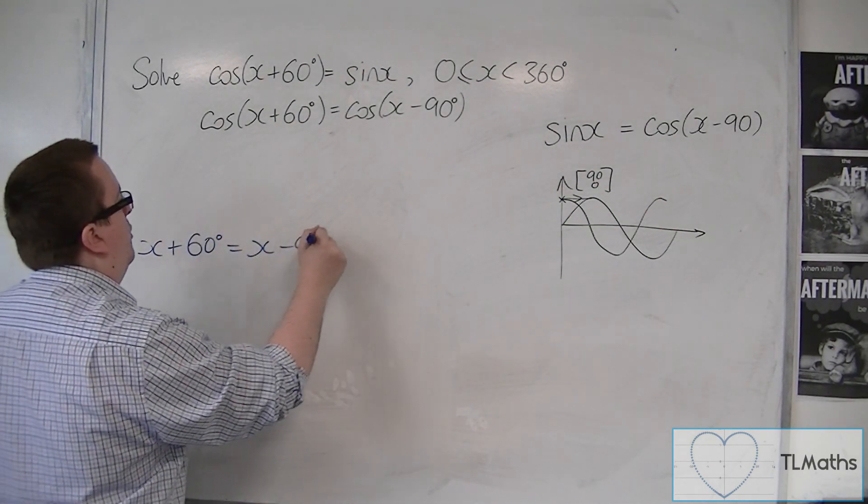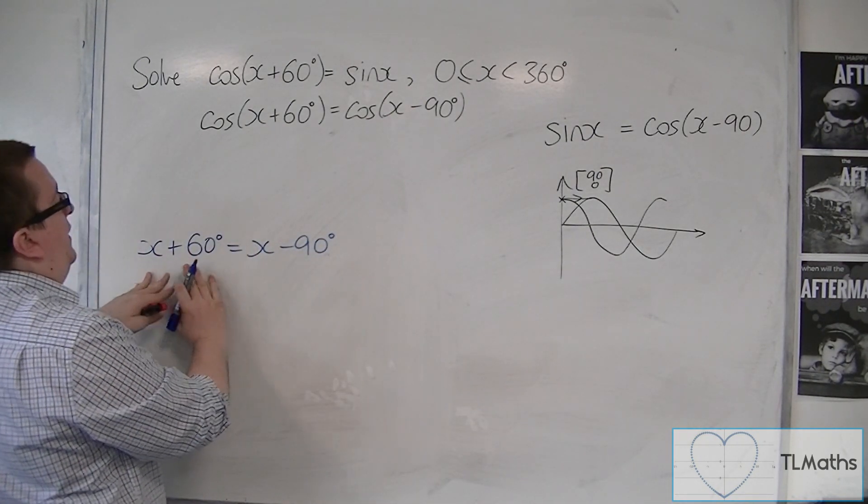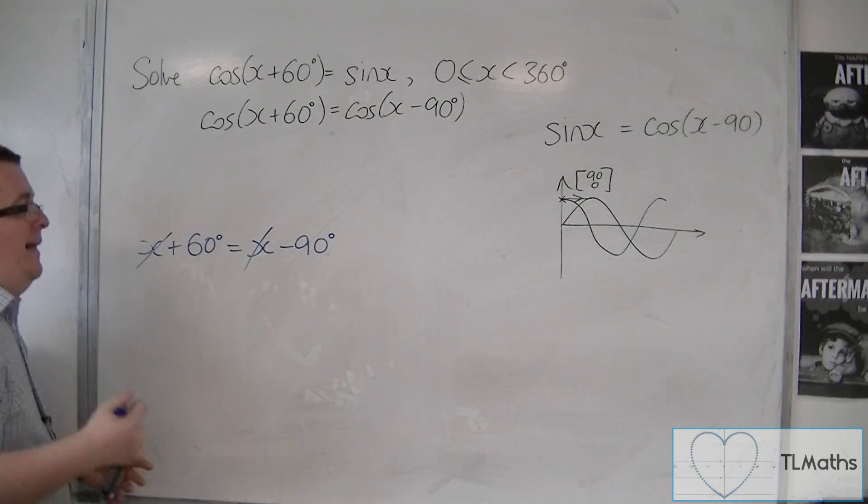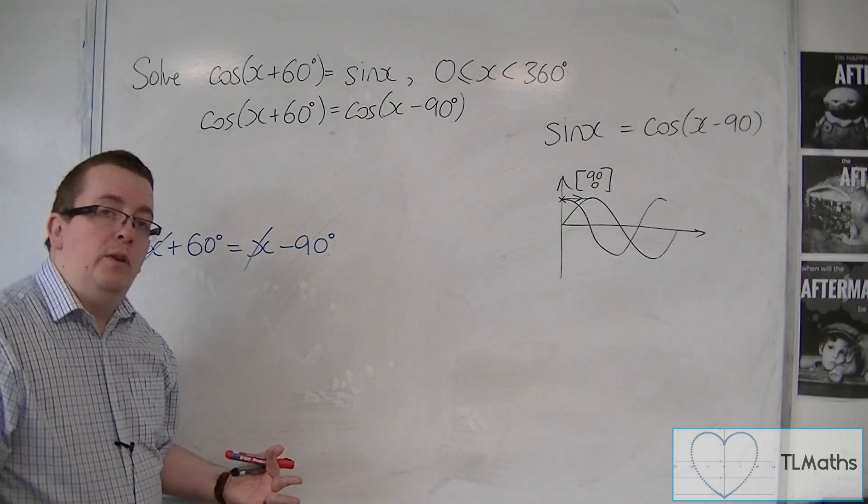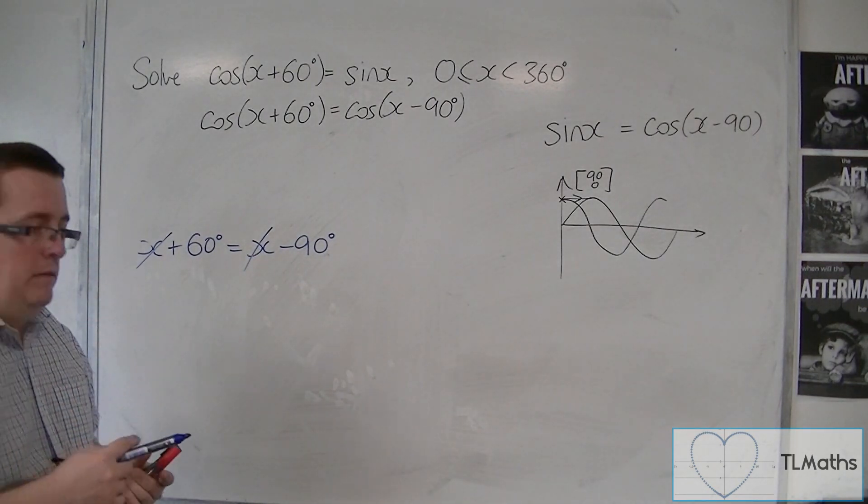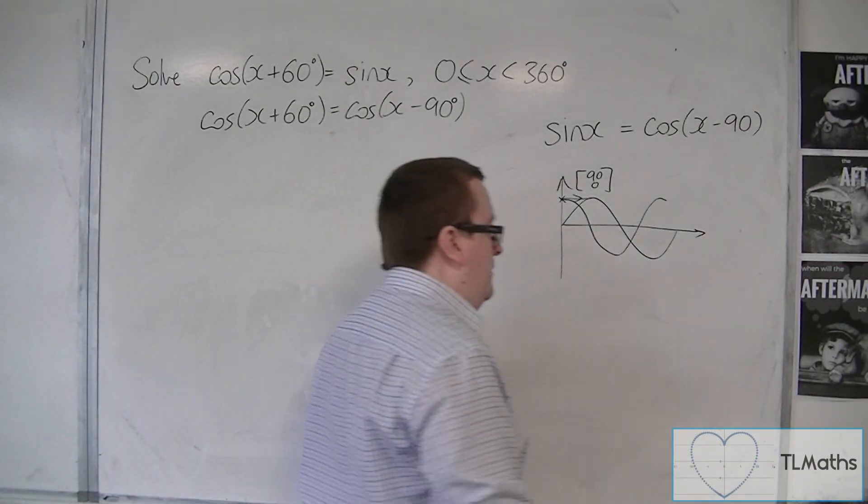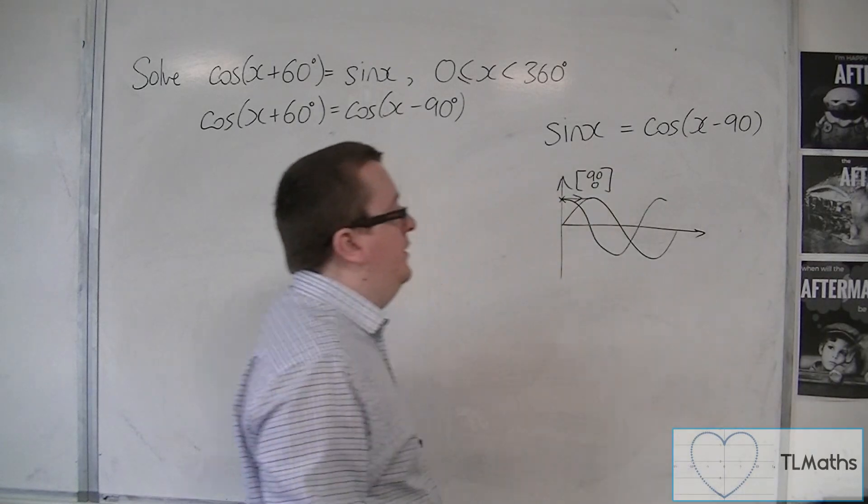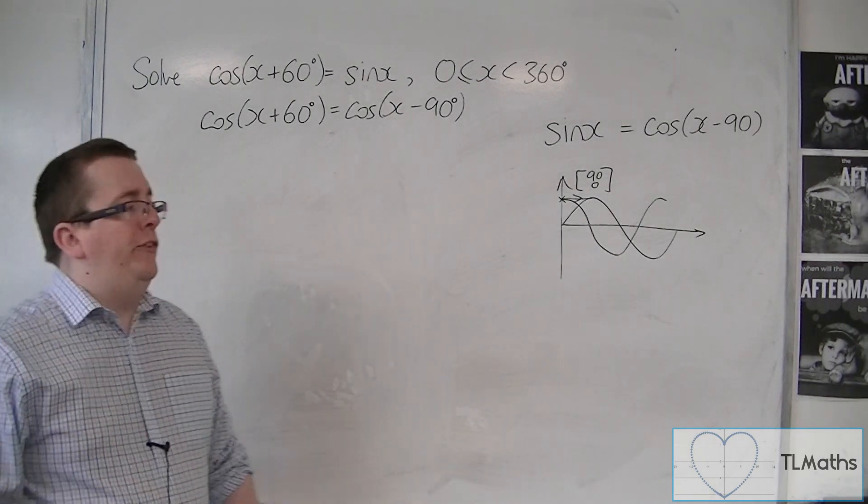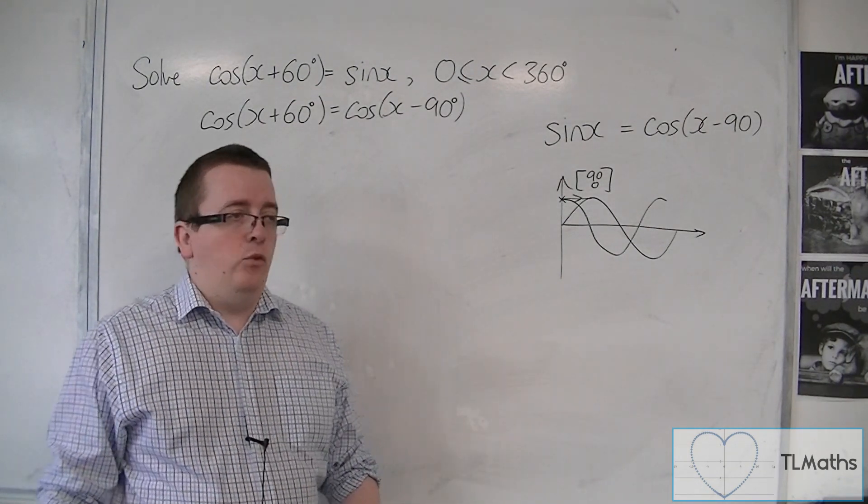If I put x+60 equal to x-90, what happens is that I can take x from both sides, and then I get left with 60 degrees as equal to minus 90 degrees, which clearly isn't right. Something has gone wrong. I can't move on until I've considered how else I can write sine x, because sine x doesn't have to be written as cos(x-90). It can be written as other things as well.